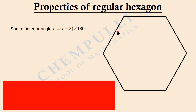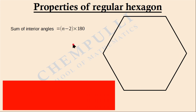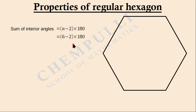A hexagon has 6 sides, so n = 6. Therefore, the sum is (6 − 2) × 180 = 720 degrees. So the sum of interior angles of a regular hexagon is 720 degrees.